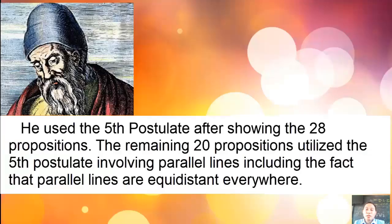Euclid used the fifth postulate after proving 28 propositions. But no one knows if he was doing this, whether he was looking at the fifth postulate as a theorem or a postulate. In the remaining 20 propositions, he used the fifth postulate for the properties of parallel lines including the fact that two parallel lines are equidistant everywhere.